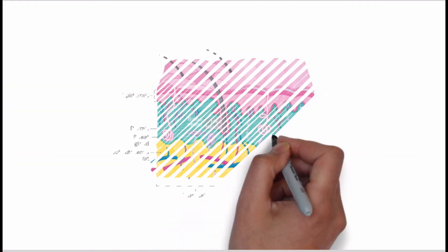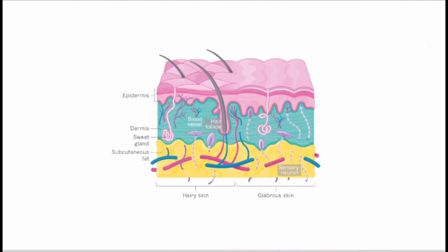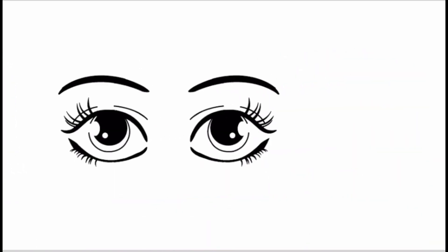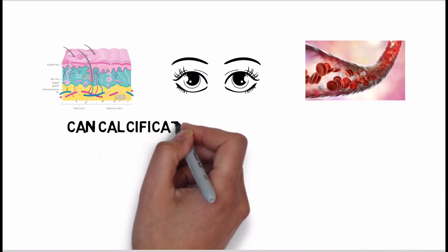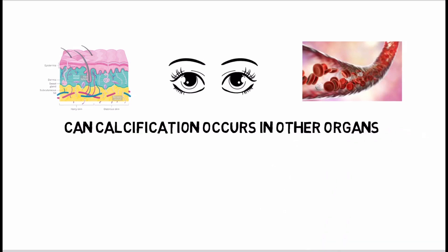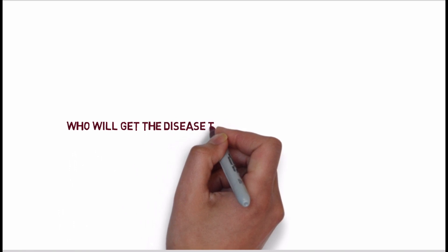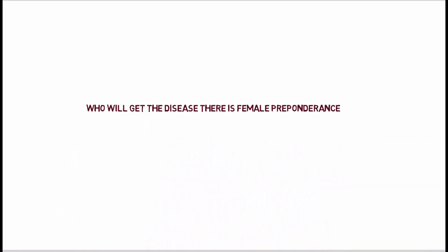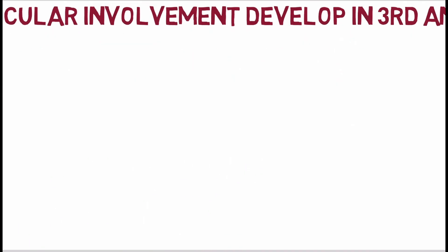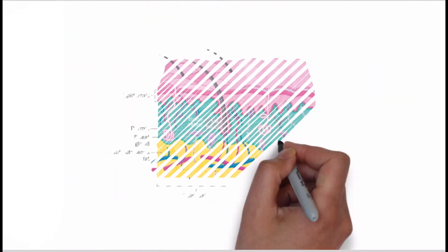The three major organs in which calcification occurs are: the mid and deep dermis of the skin, Bruch's membrane of the eye, and the media and intima of mid-size arteries. Calcification can occur in other organs as well, but these are the major ones. Females have a slightly greater chance of getting the disease. Skin changes occur in childhood, but the diagnosis is not made until serious systemic and ocular complications develop in the third and fourth decade of life.